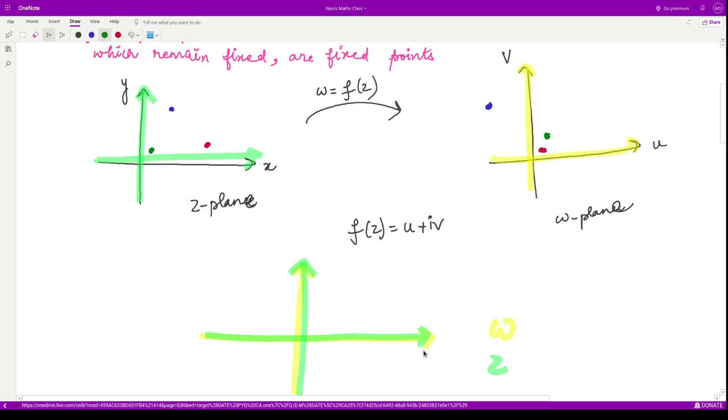So here I could write this to be the x-axis as well as the u-axis, and this to be the y-axis as well as the v-axis. Now if I mark the points - the first point would be somewhere here, the second point of z would be somewhere here, and the third point of z would be somewhere here.